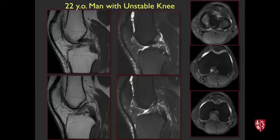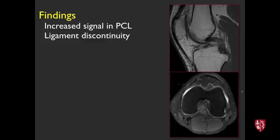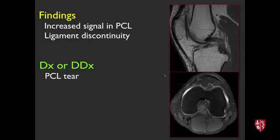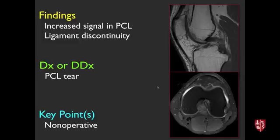Next case, 22-year-old with unstable knee. On MRI there's increased signal within the posterior cruciate ligament with little discontinuity, and on axial images the PCL is not seen as a thick black cord. This is a PCL tear. These are usually treated non-operatively unless there is a combined ACL and PCL tear; surgeons still usually reconstruct the ACL but not necessarily the PCL.